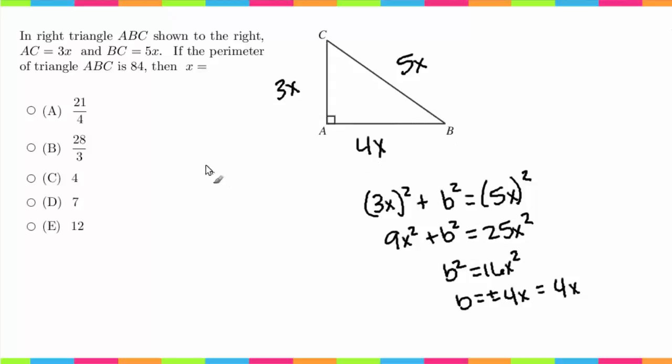Now we know that and we know that the perimeter is 84. The perimeter is just the distance around the outside. So to find that, I'm going to add up all of the side lengths. So 3x plus 4x plus 5x equals 84. 3 plus 4 is 7, 7 plus 5 is 12, 12x equals 84.